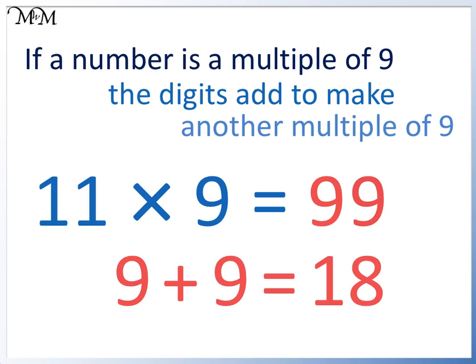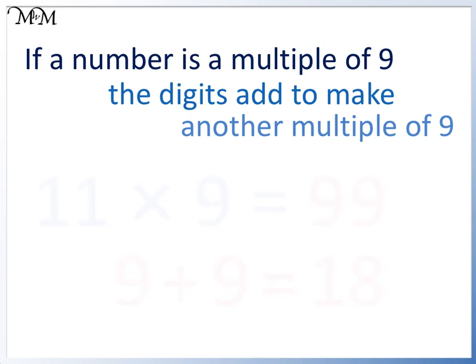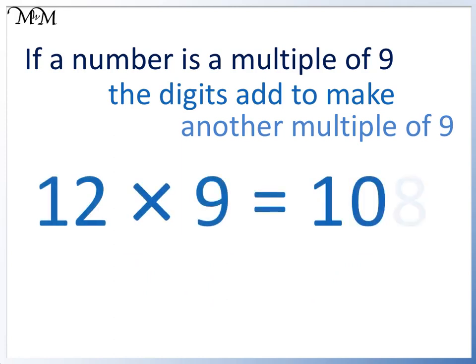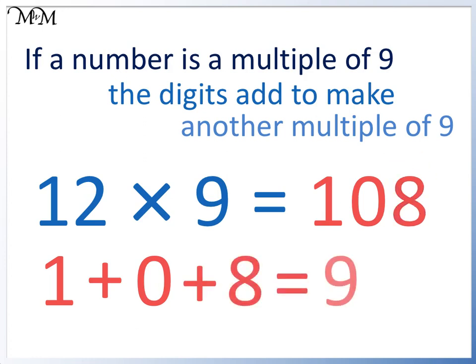12 times 9 equals 108. Here 1 plus 0 plus 8 equals 9. Therefore, we know that 108 is a multiple of 9.